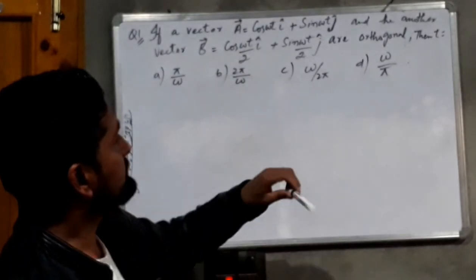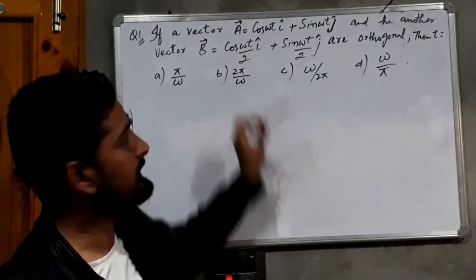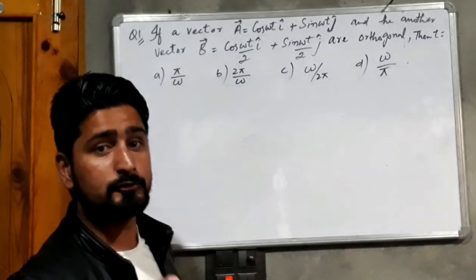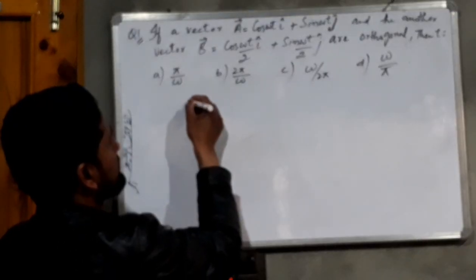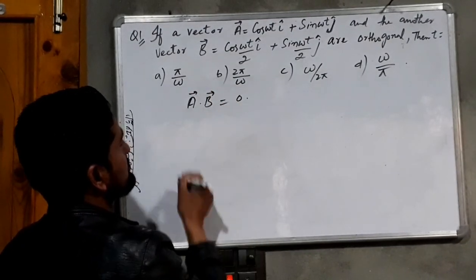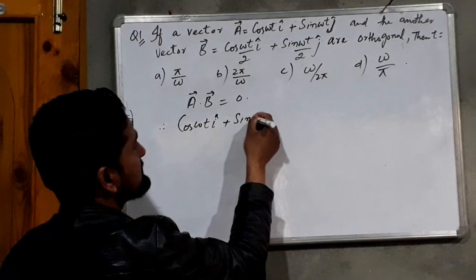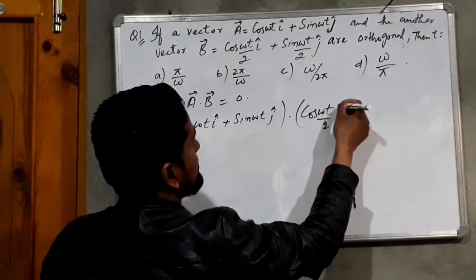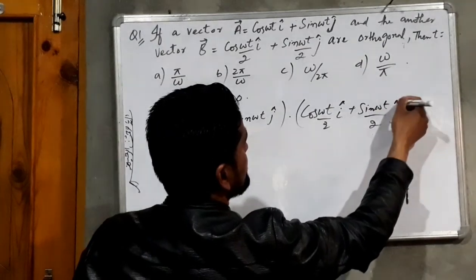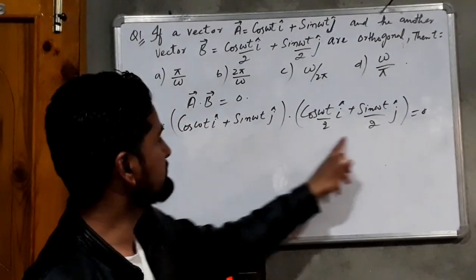As you have seen in your last topic, when the angle is 90°, we call the vectors orthogonal vectors. Since we have two vectors A and B which are orthogonal, their dot product will be zero — because for orthogonal vectors the angle is 90°, so their dot product is always zero. So therefore A·B equals cos(ωt) î + sin(ωt) ĵ dotted with cos(ωt/2) î + sin(ωt/2) ĵ is equal to zero.